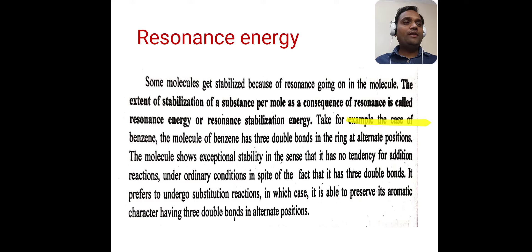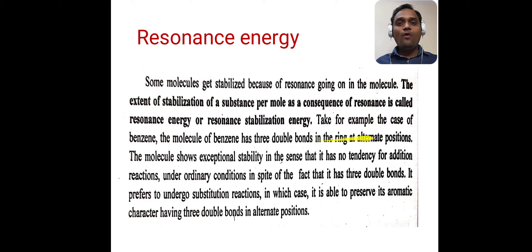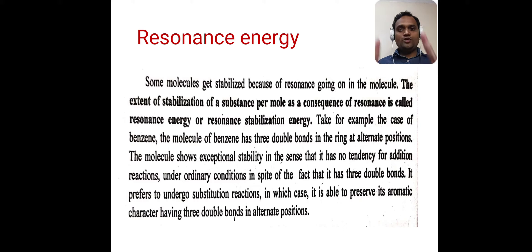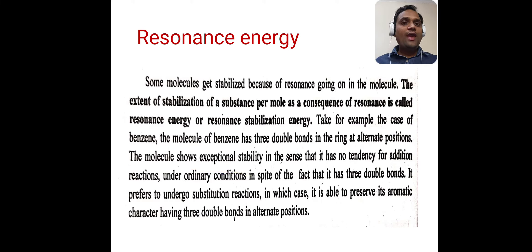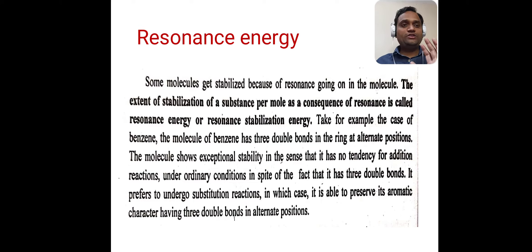Now take for example the case of benzene. The molecule of benzene has three double bonds in the ring at alternate positions. We all know the structure of benzene — there are three double bonds which are alternate. The molecule shows exceptional stability in the sense that it has no tendency for addition reactions.